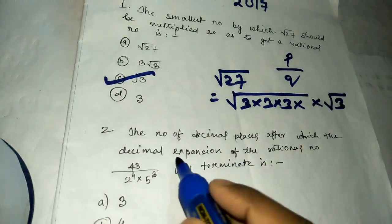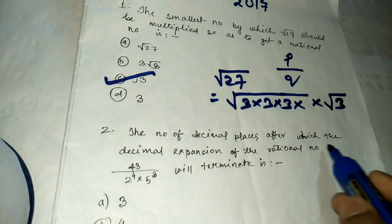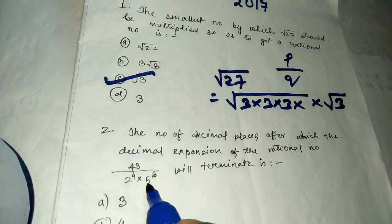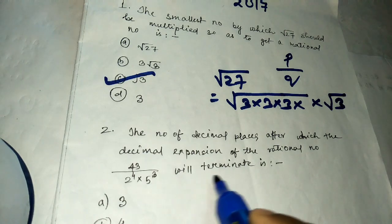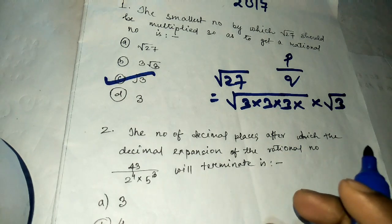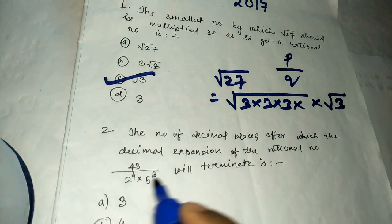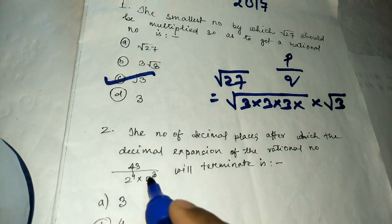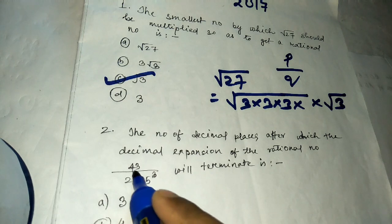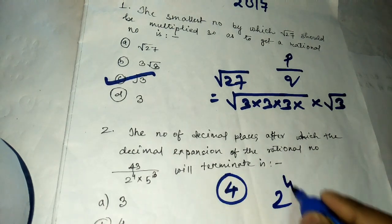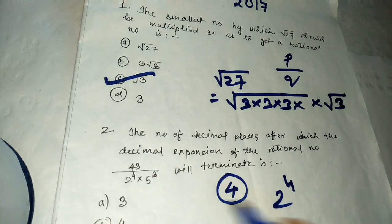Question number two: the number of decimal places after which the decimal expansion of the rational number 43 / (2⁴ × 5³) will terminate. For this we have a shortcut method — check the denominator for the highest power. The highest power here is 4, so the answer is 4.